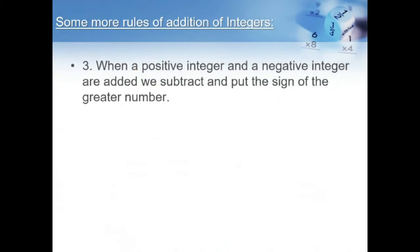The third rule: when a positive integer and a negative integer are added, we subtract and put the sign of the greater number. Example: plus 3 plus of minus 2 is equal to plus 1. Here, the positive number is greater than the negative number, so we put the sign of the positive number.